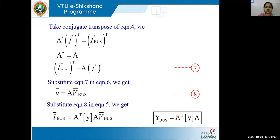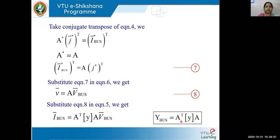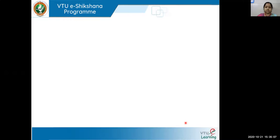Please remember this formula. Finding Y bus by inspection method is simple, but by singular transformation you need to use: Y bus = A^T · YPR · A. The order of A and Y must match. If the orders are not matching, you will definitely go wrong in multiplication. The size of both matrices will not be the same, but the order — meaning the element numbering — must be consistent. Whatever element number you maintain for your incidence matrix, the same element number must be maintained for your Y primitive.